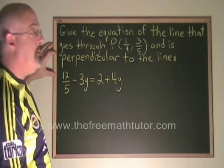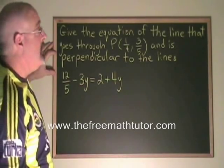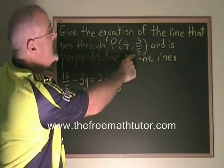Any line that is perpendicular to a horizontal line has to be a vertical line. And any vertical line that goes through this point would have to have the equation x equals 1 quarter.